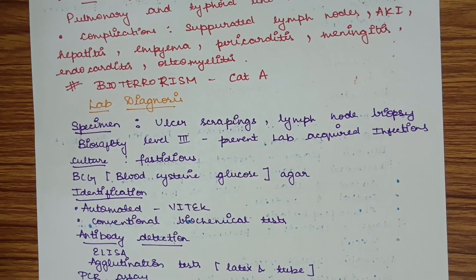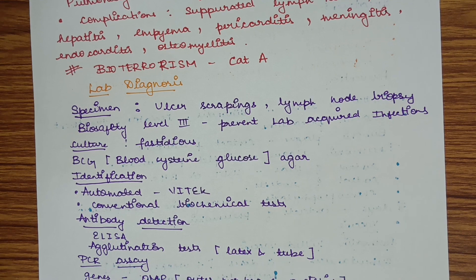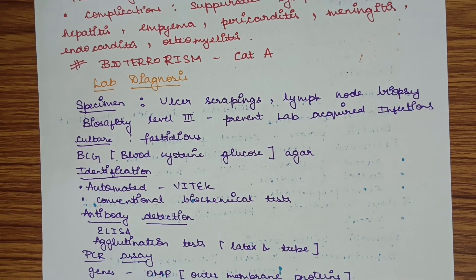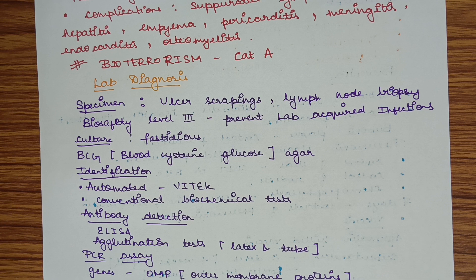For lab diagnosis, the specimen collected will be from ulcer scrapings or lymph node biopsy, since ulcer formation and lymph node involvement are characteristic. While carrying the specimen, biosafety level 3 must be followed to prevent lab-acquired infections.